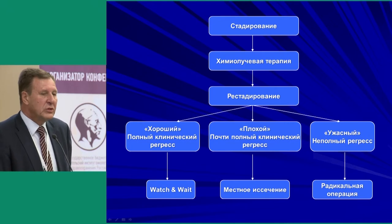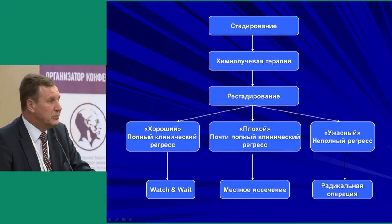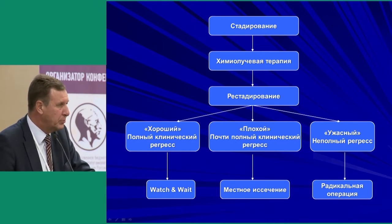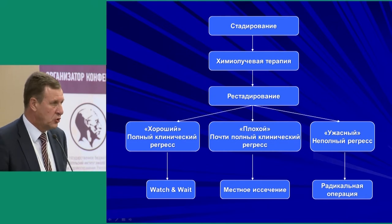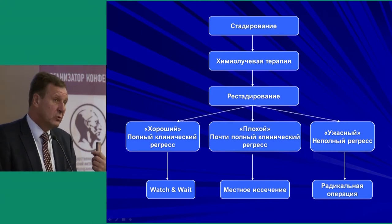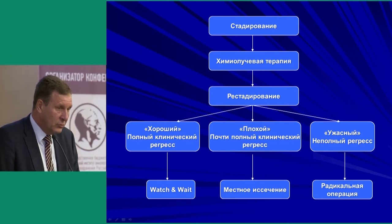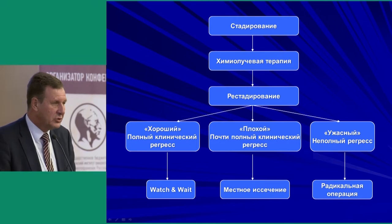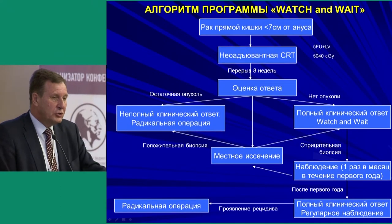For bad prognosis with near-complete clinical regression, local excision is considered. For ugly — incomplete regression where the tumor did not respond — we must admit that according to our and international data, about 70% of tumors respond to chemo-radiation therapy with some degree of regression, but 30% or more show only stabilization, meaning the tumor did not respond. Taking locally advanced cancer patients through full chemo-radiation and then offering surgery at the same stage as before is unsatisfactory. We need to consider what further post-operative steps are appropriate.